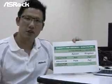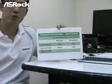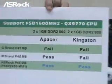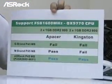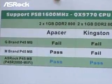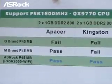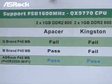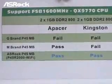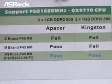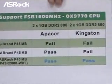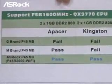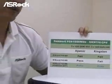Here's the summary of the test results. With the Intel QX9770 CPU, the G-Brand P45 motherboard failed to boot up even when we tried the APESA DDR2-800 or the Kingston DDR2-800 memories. On the M-Brand P45 motherboard, with the APESA DDR2-800 it booted fine, but with the Kingston DDR2-800 it failed. On the SROG P45 motherboard — the P45R2000 Wi-Fi — with the QX9770 CPU, no matter whether we used the APESA DDR2-800 or the Kingston DDR2-800, it booted up perfectly. So which brand P45 motherboard do you want to choose? I guess the answer is clear.